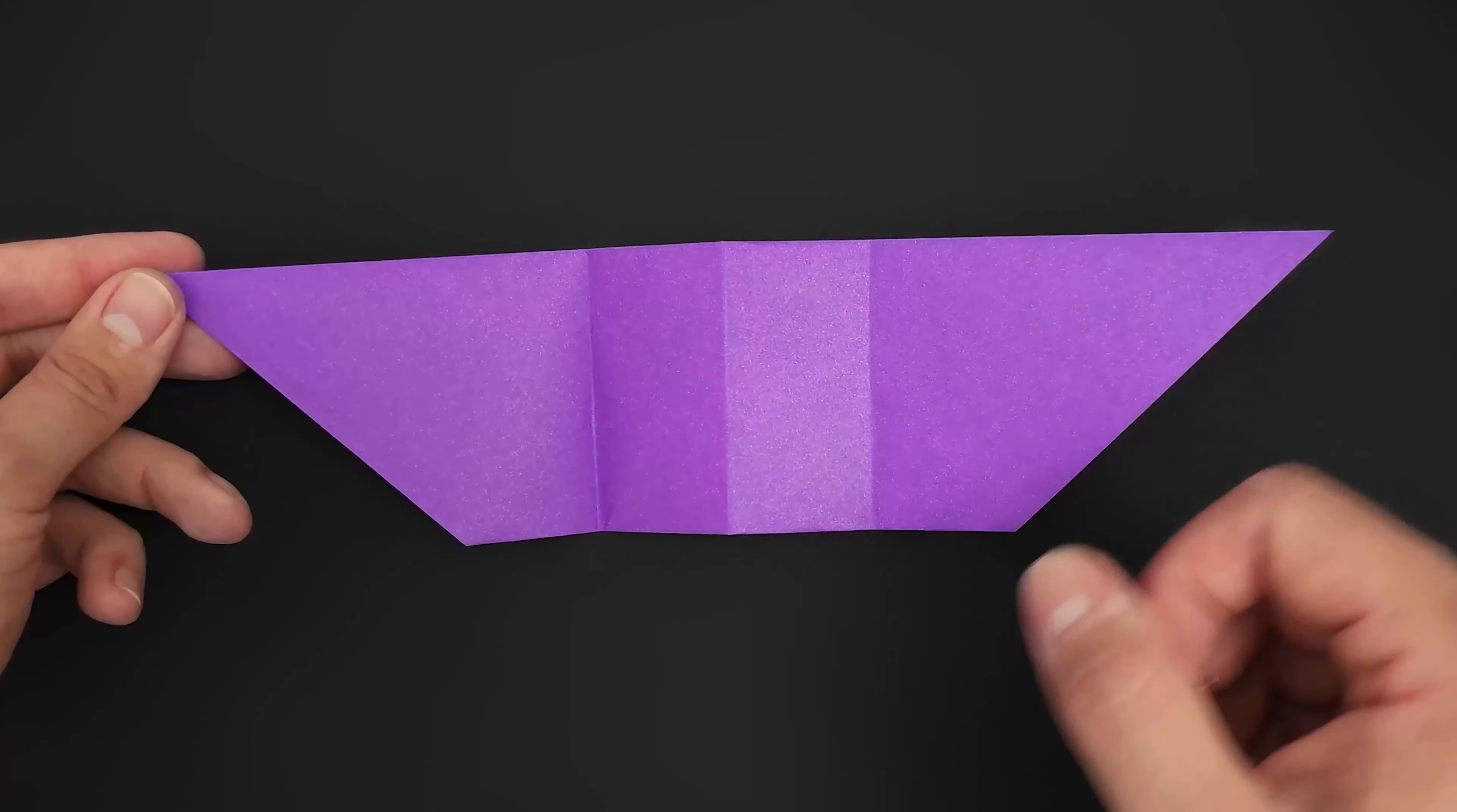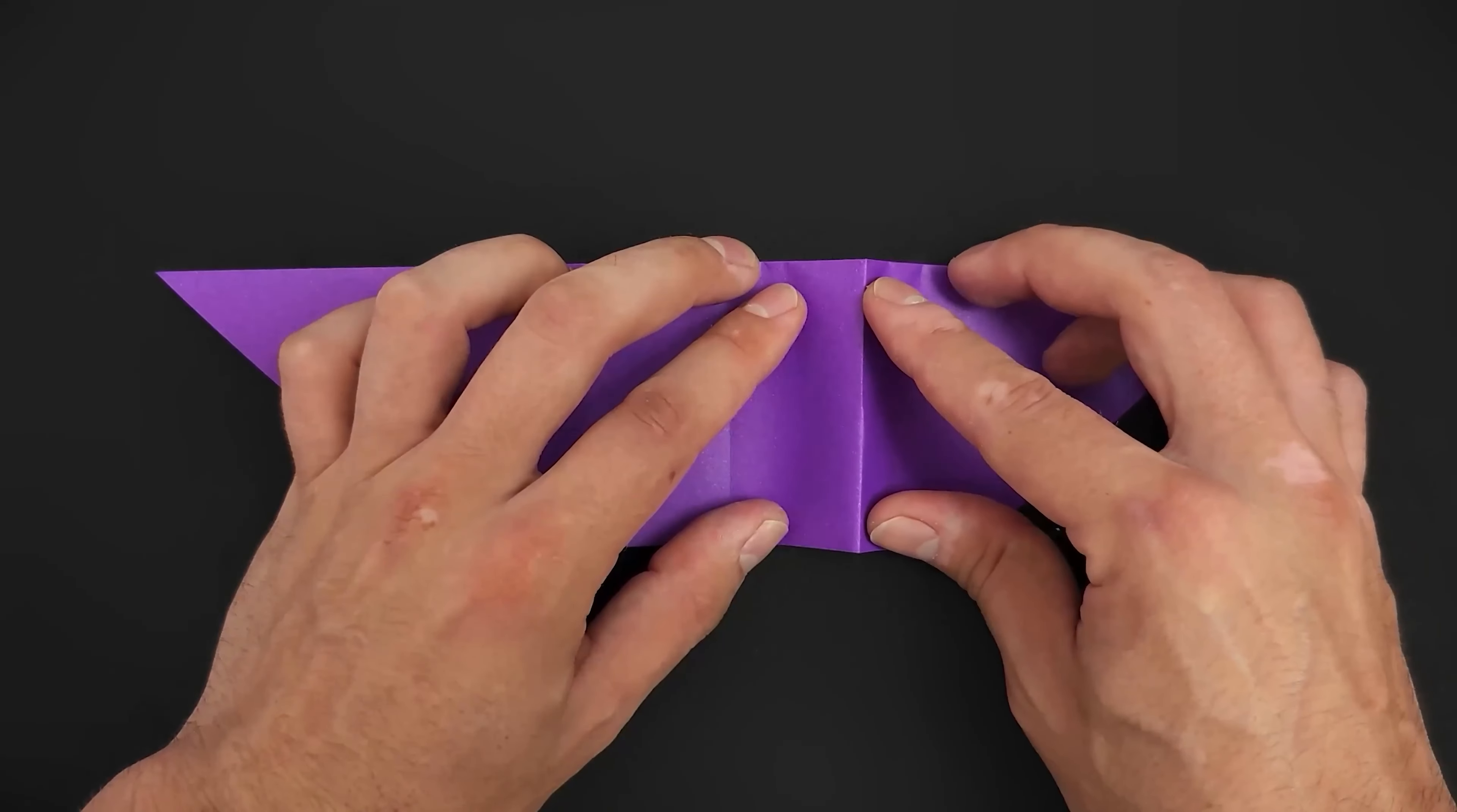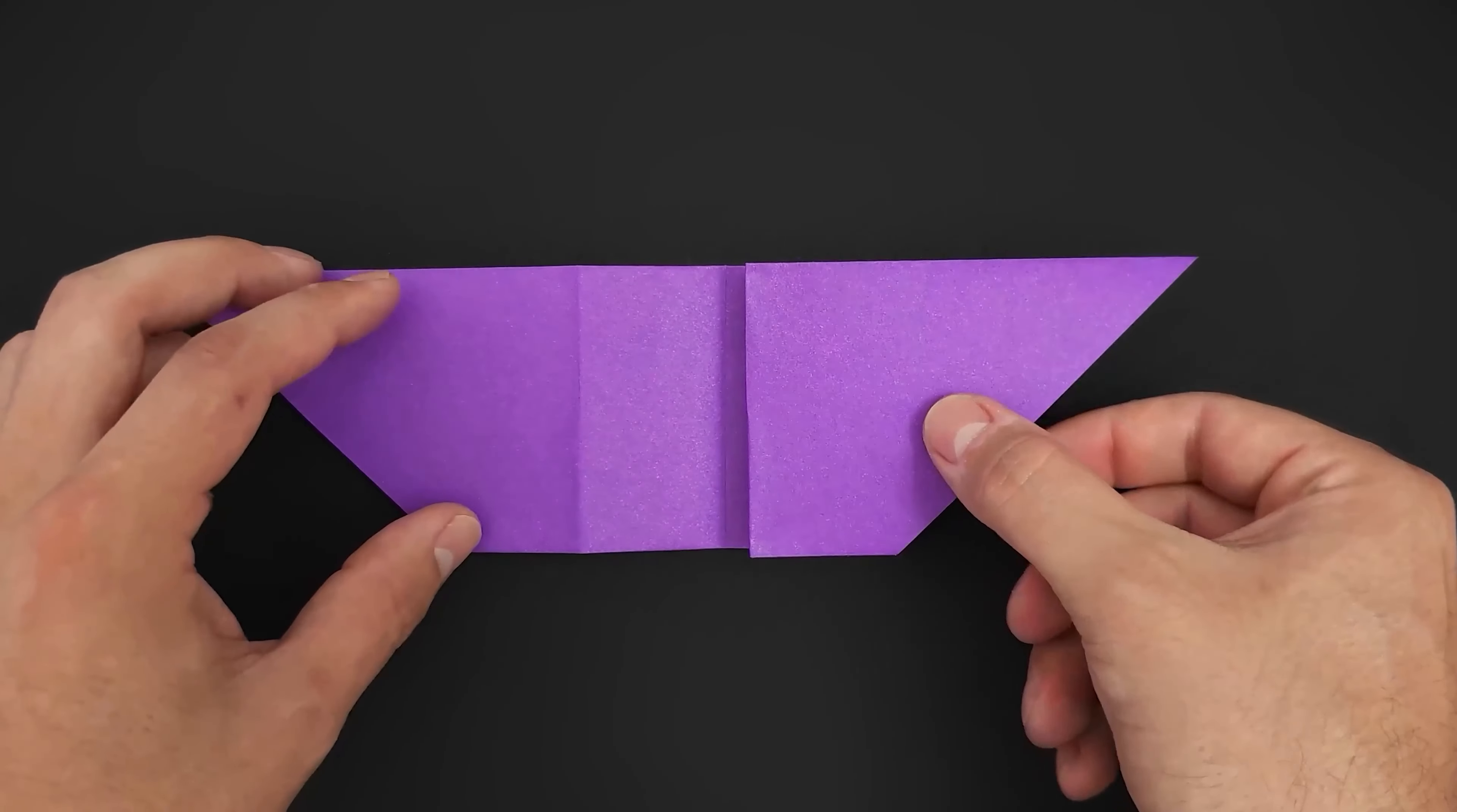Now, we'll turn it over, and fold both creases we made to the middle. We can start with the right side. And then repeat on the left side.